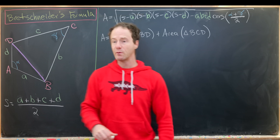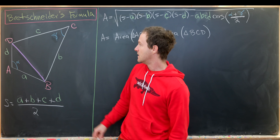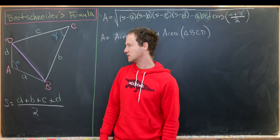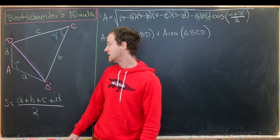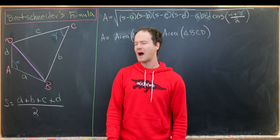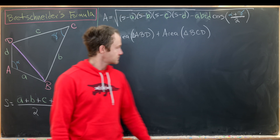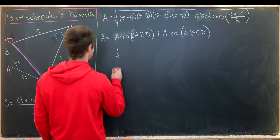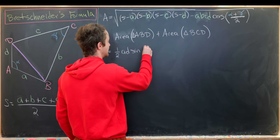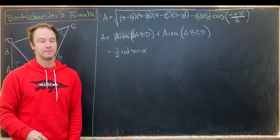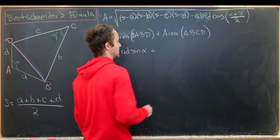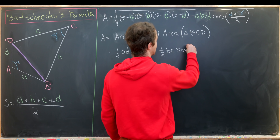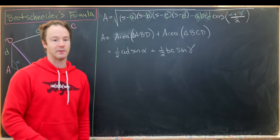We'll use a well-known formula for the area of a triangle based on two side lengths and the included angle. A little trigonometry gives the height in terms of these side lengths and angle. So the area of triangle ABD equals (1/2)·a·d·sin(alpha), and the area of triangle BCD equals (1/2)·b·c·sin(gamma).